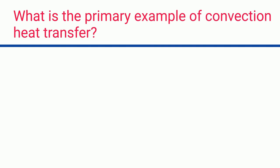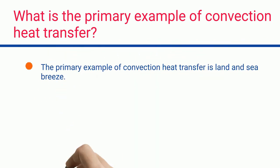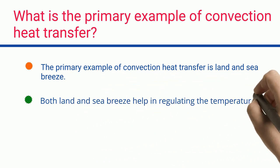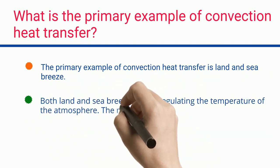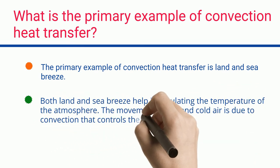What is the primary example of convection heat transfer? The primary example of convection heat transfer is land and sea breeze. Both land and sea breeze help in regulating the temperature of the atmosphere. The movement of hot and cold air is due to convection that controls the atmospheric temperature.